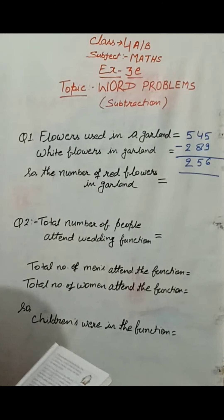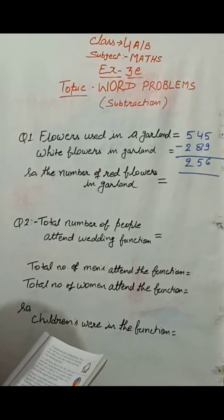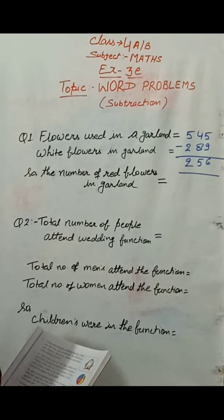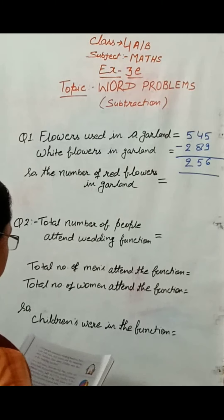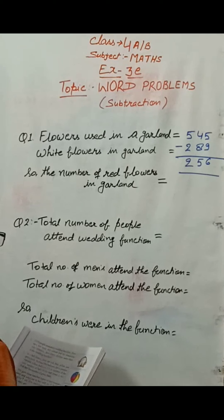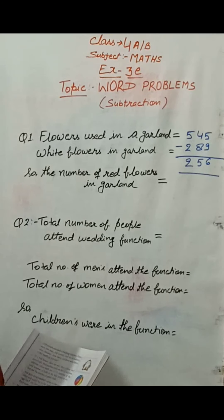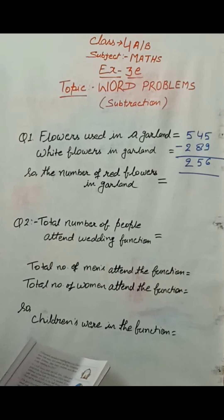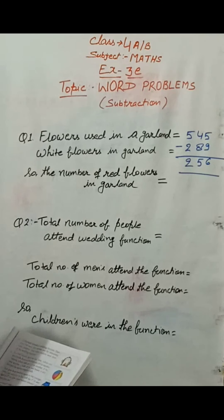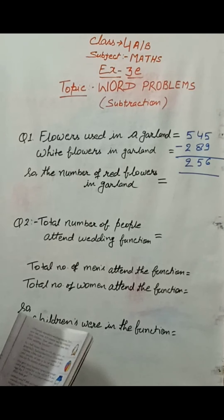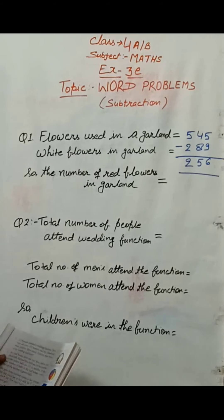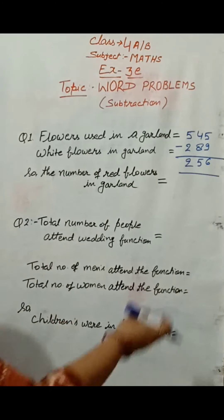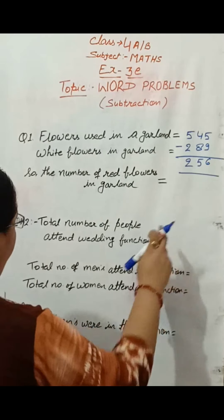Question number two: 2159 people attended a wedding function. There were 640 men, 810 women, and the remainder are children. How many children were there at the wedding function? In this question we have to apply both addition and subtraction operations. First, we add the number of men and women, then subtract that from the total.